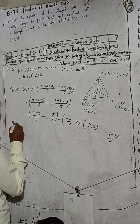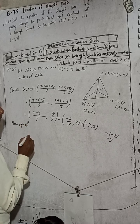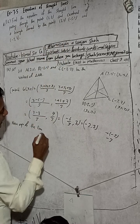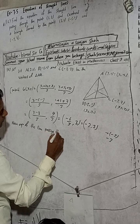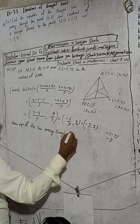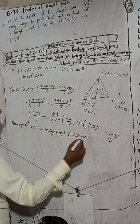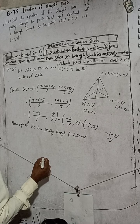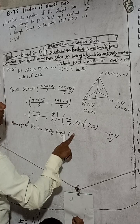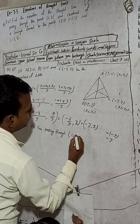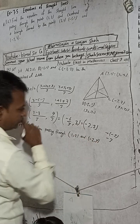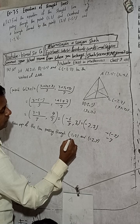Now, the equation of the straight line passing through the point (1, 2) and the centroid (-2, 3). We have two points: the given point (1, 2) and the centroid (-2, 3). You can take either point as the first; you'll get the same answer.